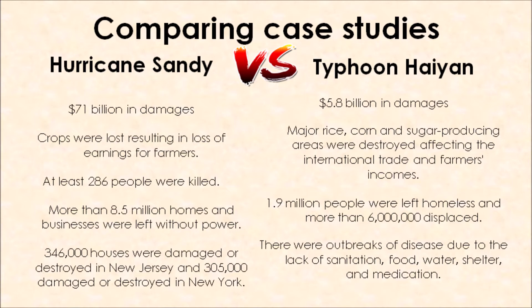Hurricane Sandy killed 286 people, but when you compare that to Typhoon Haiyan, that number is significantly more. Hurricane Sandy had 346,000 houses damaged with 8.5 million homes and businesses left without power, whereas Typhoon Haiyan left 1.9 million people homeless because their houses were damaged or destroyed. So when we compare our case studies, we see different impacts and different effects, which ultimately means we need to respond to these low pressure weather events in very different ways. We need to think about what factors could influence those effects.